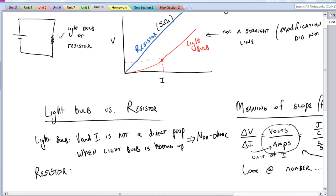So you'll see, we'll actually start focusing most of our attention on these things called resistors. And you'll notice V and I is a direct proportion for a resistor.